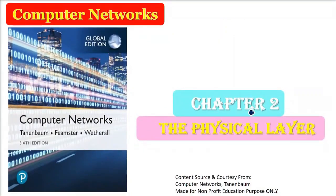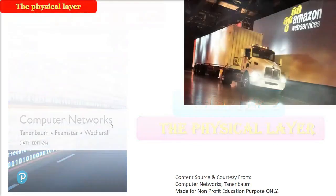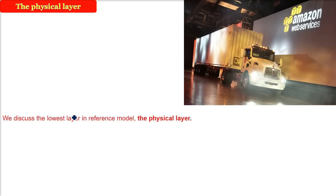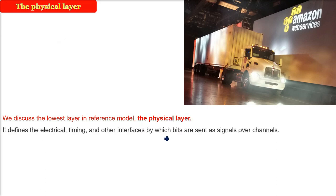In computer networks, we are looking at chapter number two, the physical layer. The physical layer is the lowest layer. Whether you talk about the ISO OSI model or the TCP/IP model, this layer is responsible for actual bit transmission. Whichever reference model you choose, this physical layer is important.